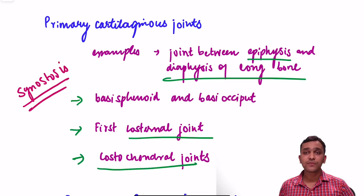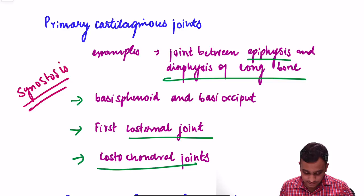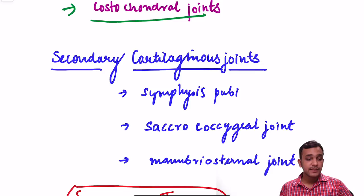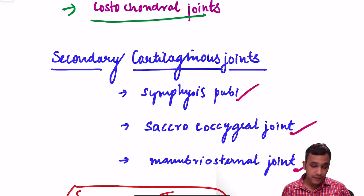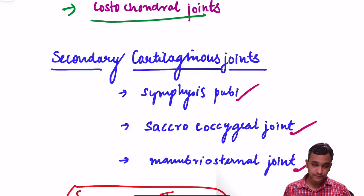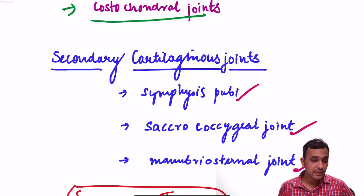Remember that the first costo-sternal joint is a primary cartilaginous joint; the rest of the costo-sternal joints are plane and oval joints. Coming to secondary cartilaginous joints: these joints are covered by a thin layer of hyaline cartilage and united by a disc of fibrocartilage. Examples are symphysis pubis, sacrococcygeal joint, manubriosternal joint, joints between intervertebral discs, and symphysis menti. Movement is permitted due to the compressible pad of fibrocartilage.